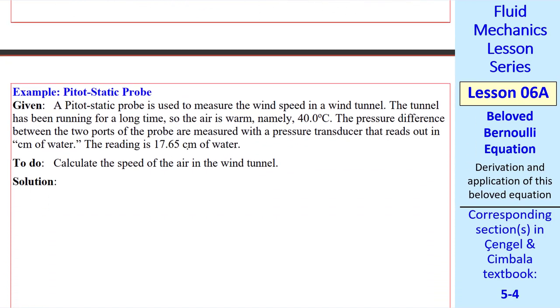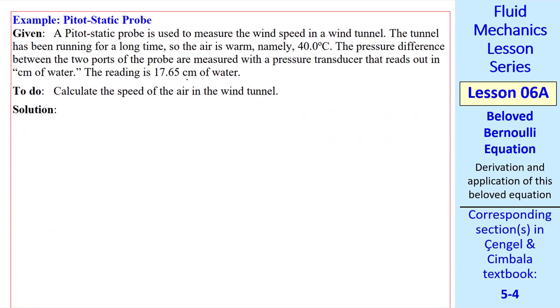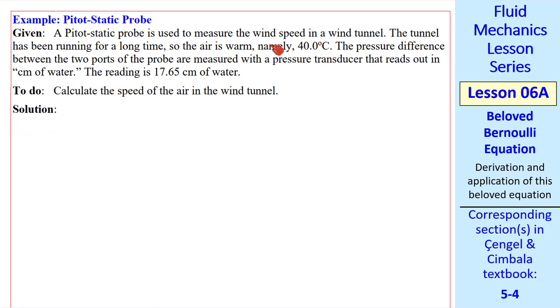So finally, let's do an example problem using a pitot static probe. We use a pitot static probe to measure the wind speed in a wind tunnel. The air is warm, 40 degrees C. And we measure the pressure difference between the two ports of the probe with a transducer that reads out in centimeters of water.